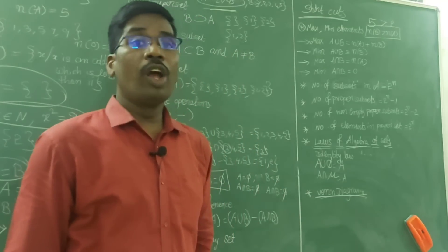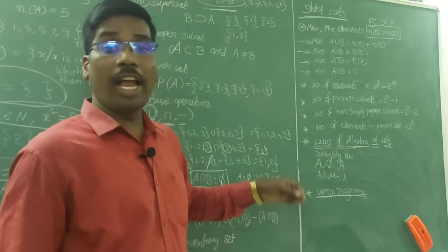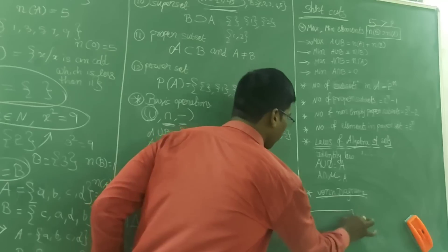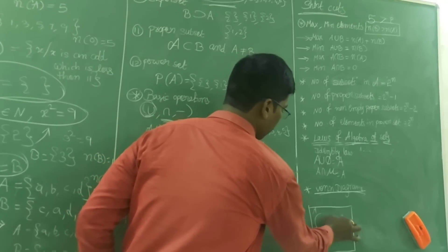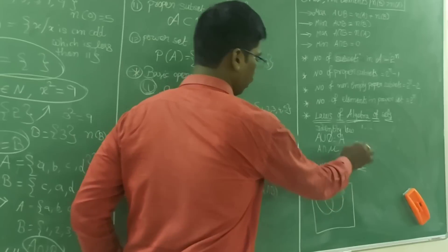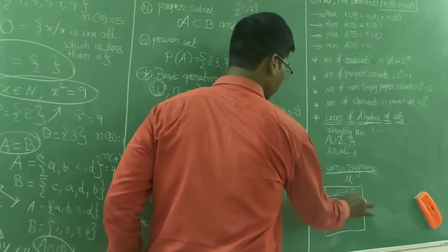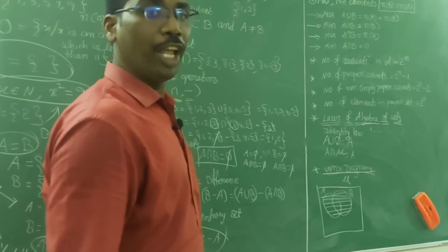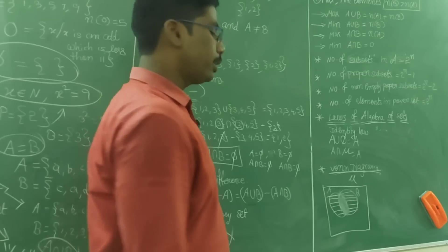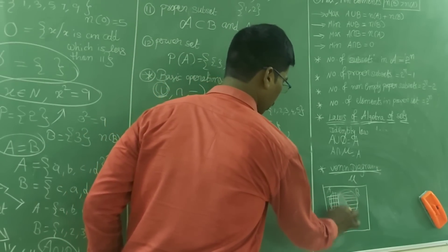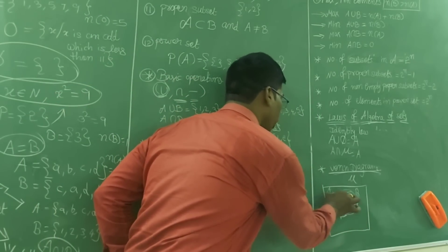Venn diagrams: every set is denoted by an ellipse in the diagram, and the universal set is represented by a rectangle. Inside the rectangle, A and B are two ellipses. A ∪ B covers both ellipses together. A ∩ B is the overlapping region of the two ellipses. A − B is only the part of A that does not overlap with B — the element should be present in A and not present in B.